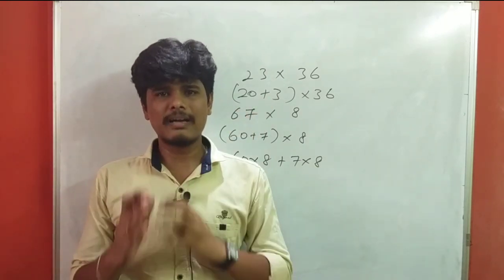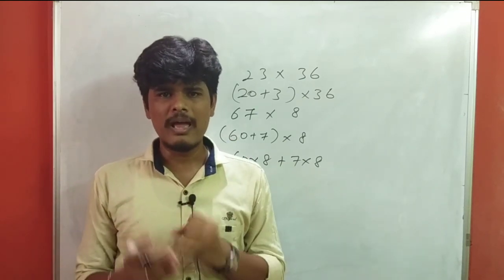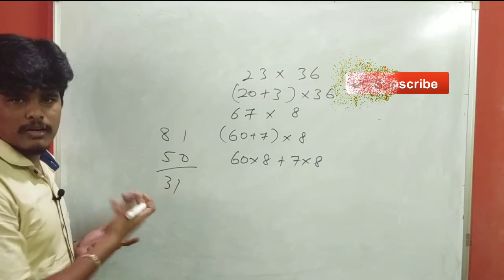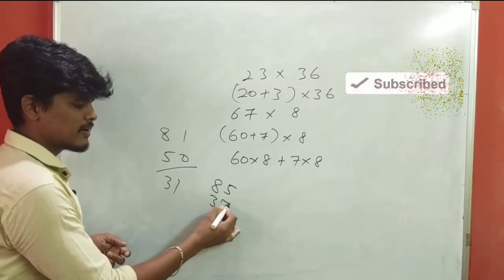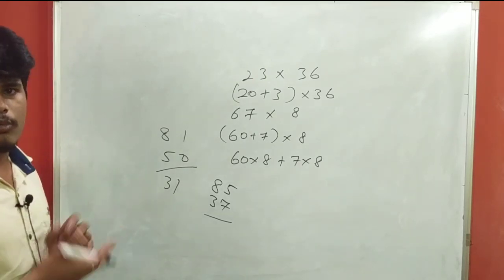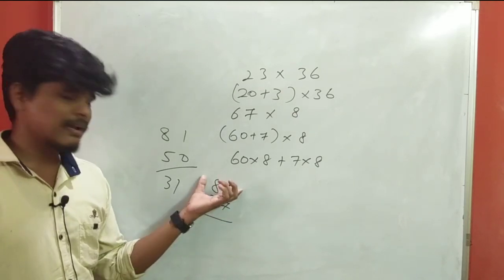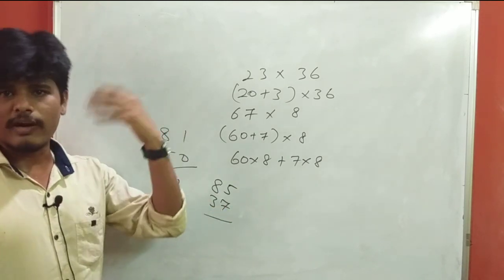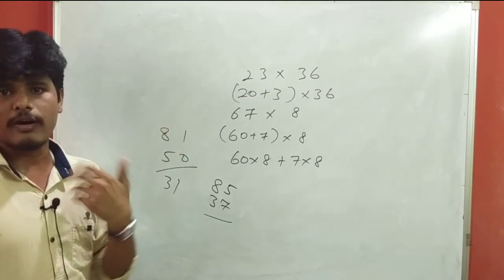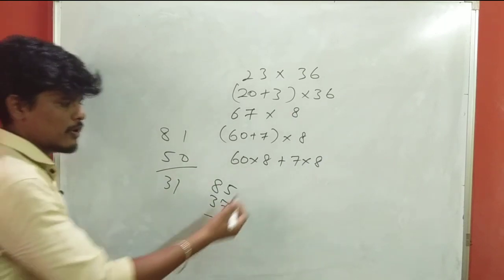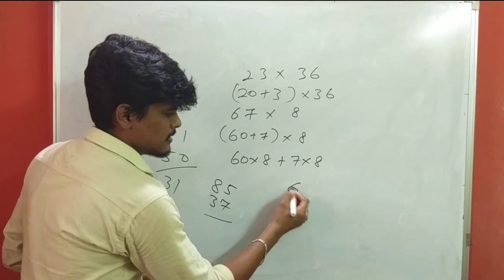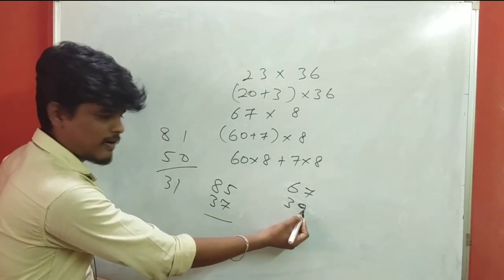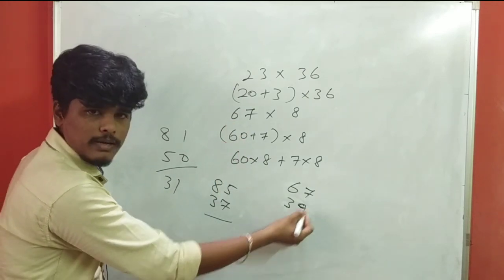If you take two numbers, you can calculate the multiplication very easily. For example, if you have 88 or 37, you can round the number. If you have 85, you can round to 45 or 40. For subtraction, for example, 67 minus 39: round 39 to 40, then 67 minus 40 is 27, then add back 1 to get 28.